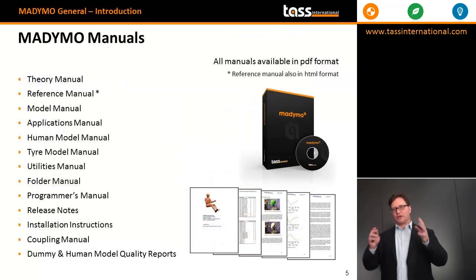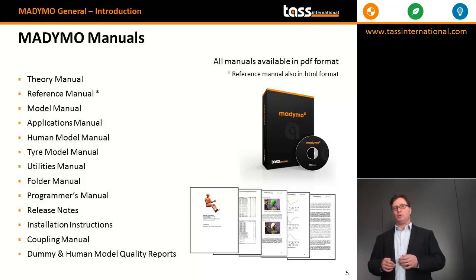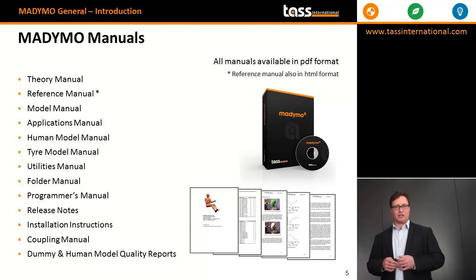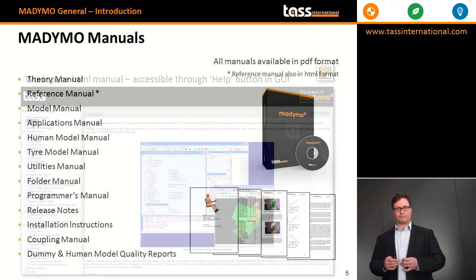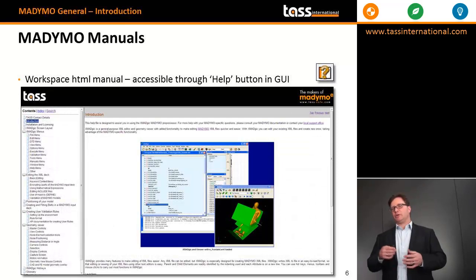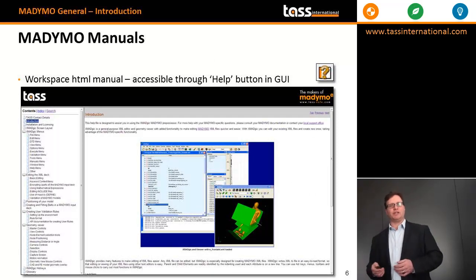The Madimo software suite comes with a large set of manuals, most notably the reference manual which contains an alphabetical listing of all the XML elements that can be used in a Madimo simulation. Important in that aspect are also the dummy and human model quality reports, which give a detailed overview of the quality of the crash test dummy models. The workspace tools come with HTML manuals describing in detail all the features that can be used in the pre- and post-processing tools.